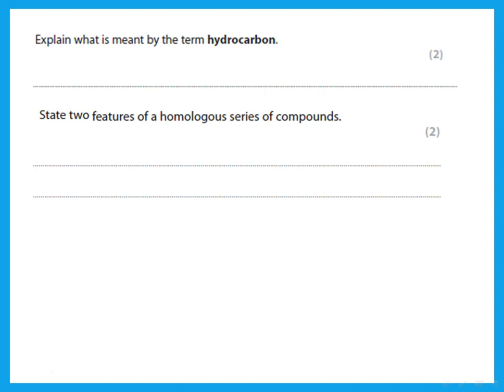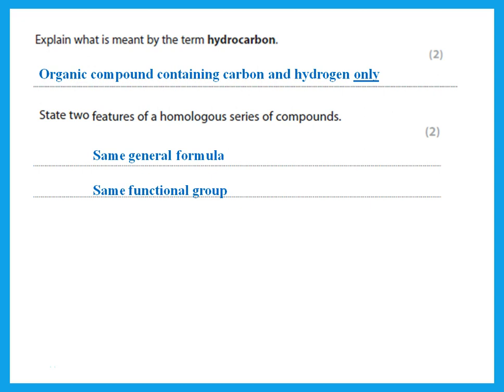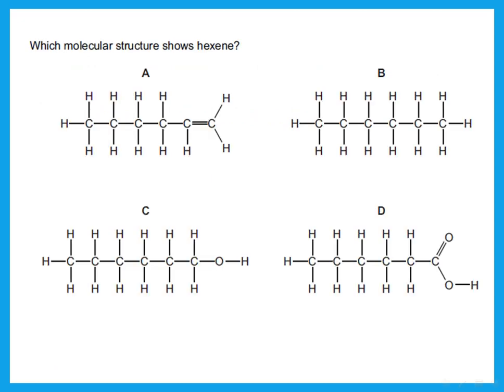Let's look at some exam-style questions. 'Explain what is meant by the term hydrocarbon.' A hydrocarbon is an organic compound containing carbon and hydrogen only — you must say 'only,' because all organic compounds contain carbon and hydrogen, but hydrocarbons have no other elements such as oxygen. 'State two features of a homologous series': members have the same general formula, the same functional group, and as a third feature, the same chemical properties.